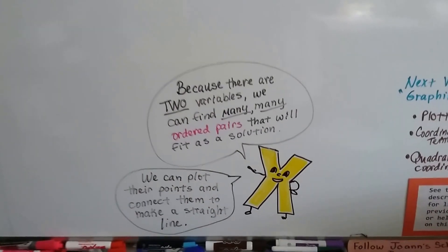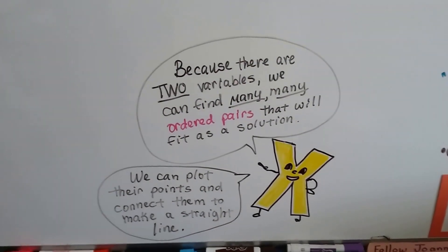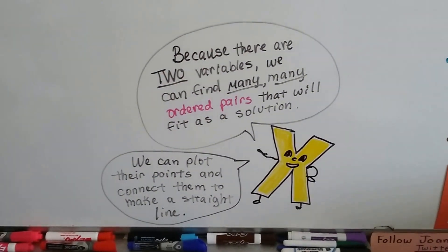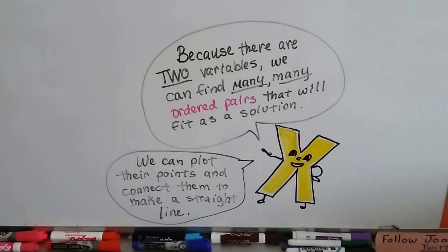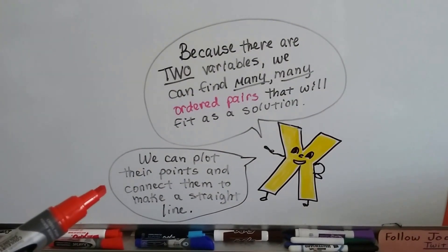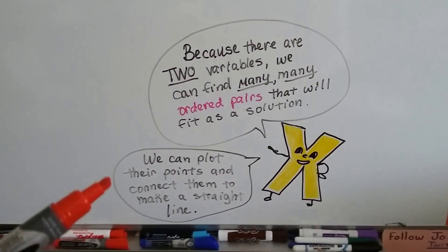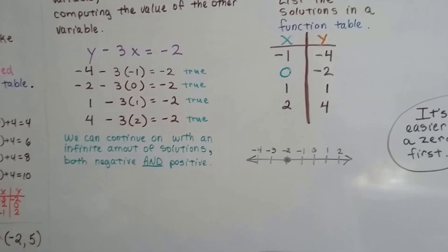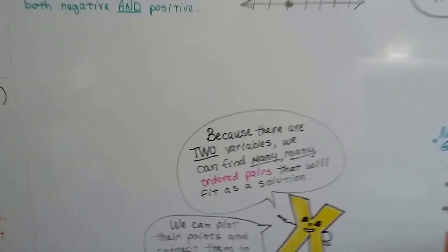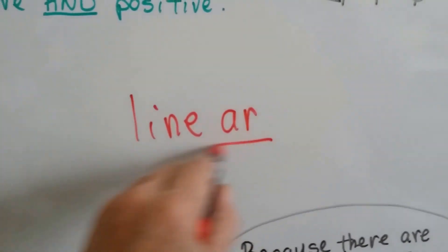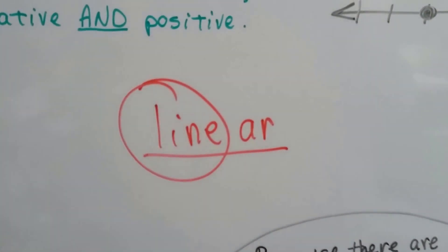Now, because there's two variables, we can find many, many ordered pairs that will fit as a solution. And what we can do with those ordered pairs, because we learned about plotting points, we can actually plot their points on a coordinate plane and connect them to make a straight line. That's why this type of equation is called a linear equation. And if you look at the word linear, it's got the word line in it.